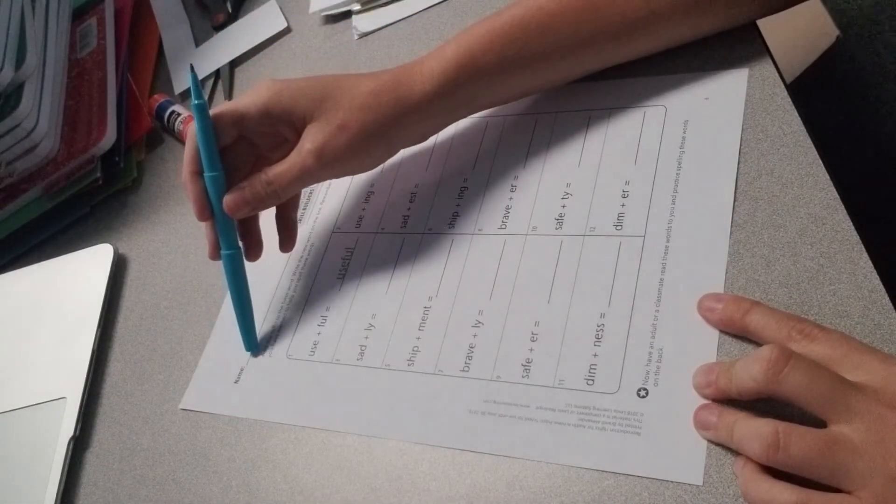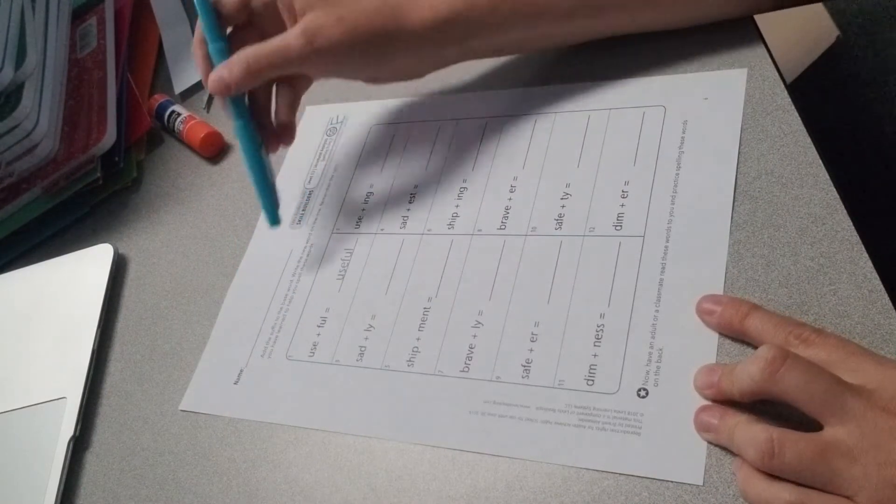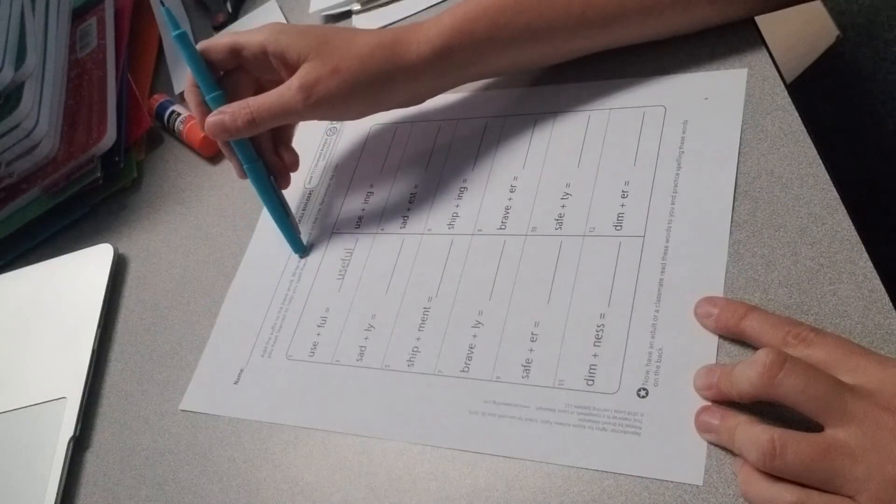The instructions say add the suffix to the base word. Write the new word on the line. Remember the rules you have learned to help you spell the words.